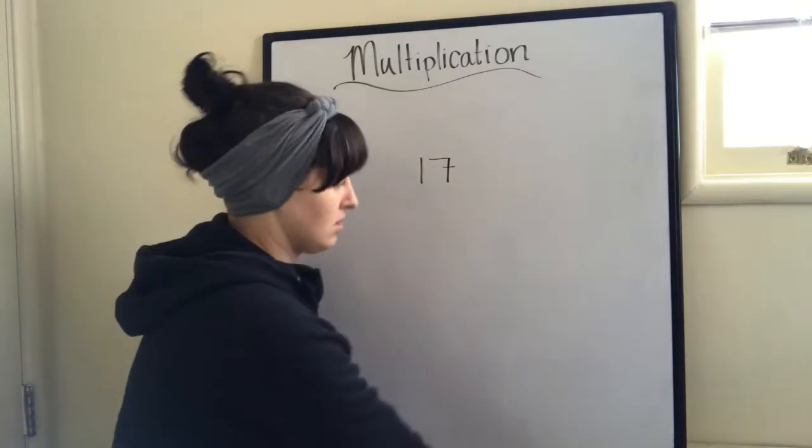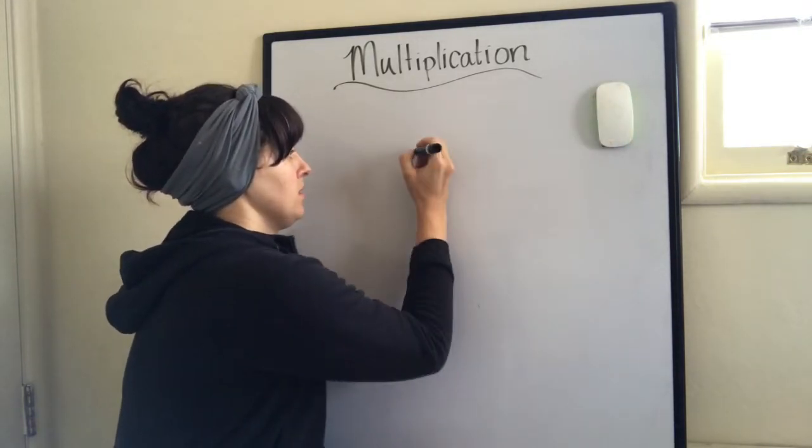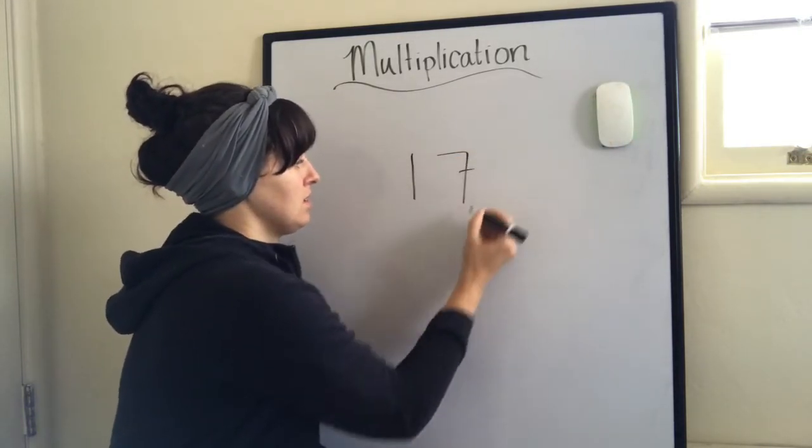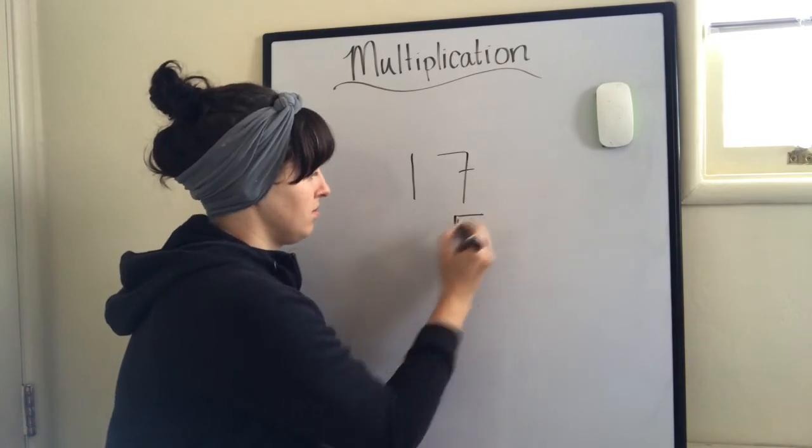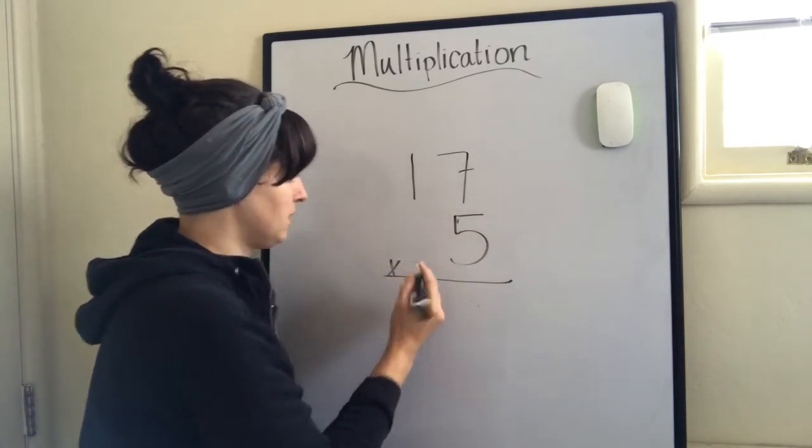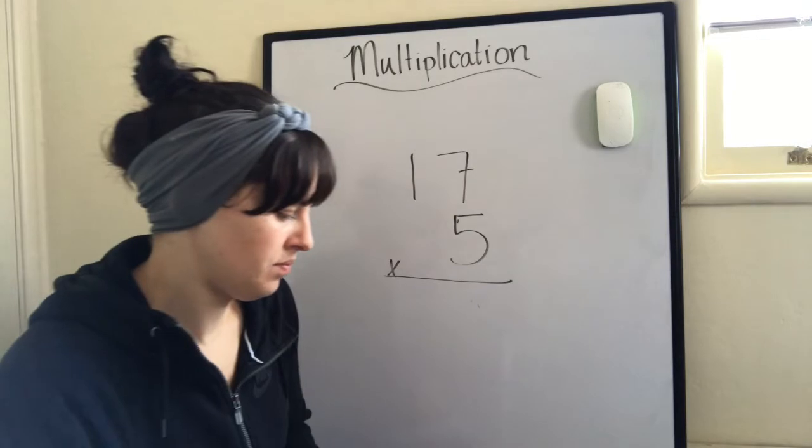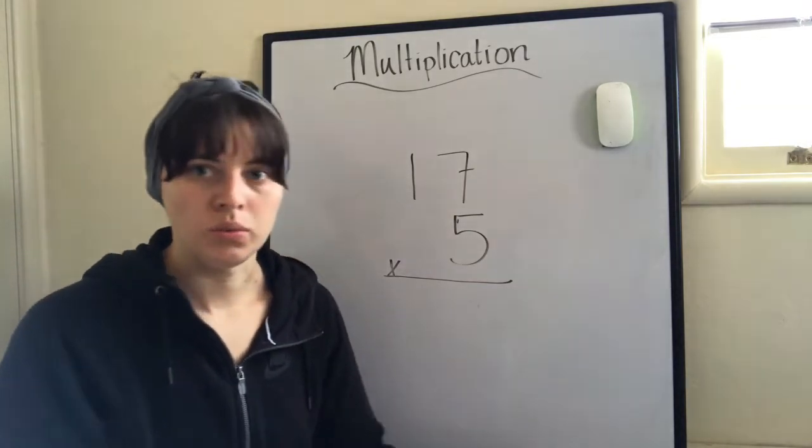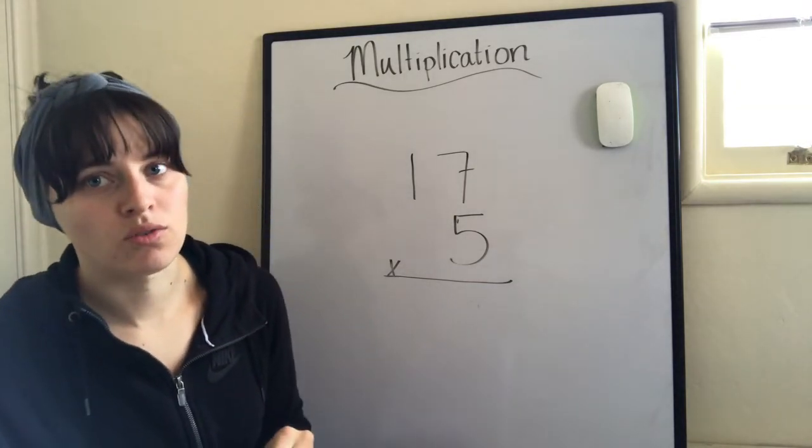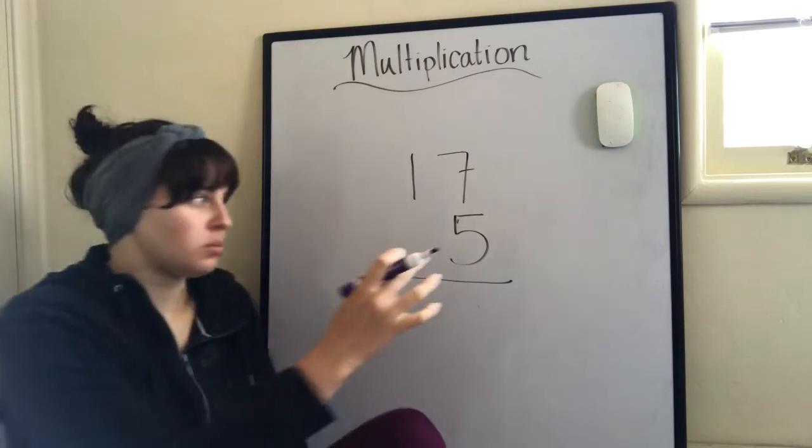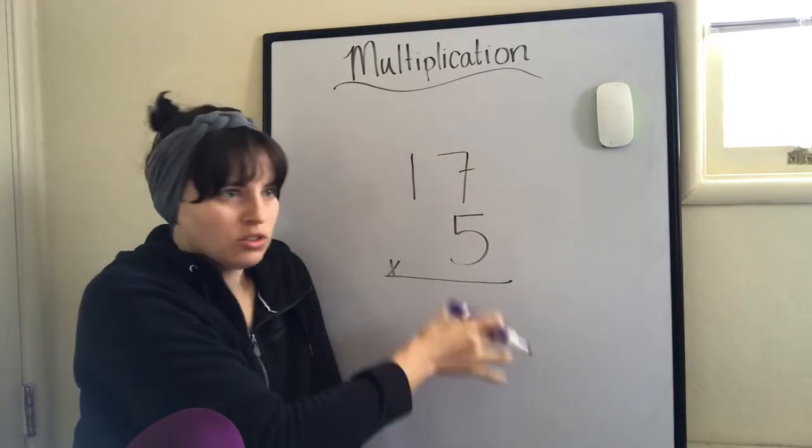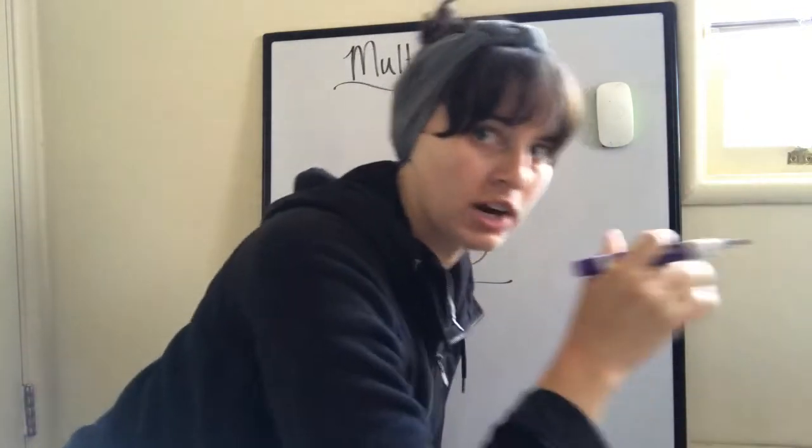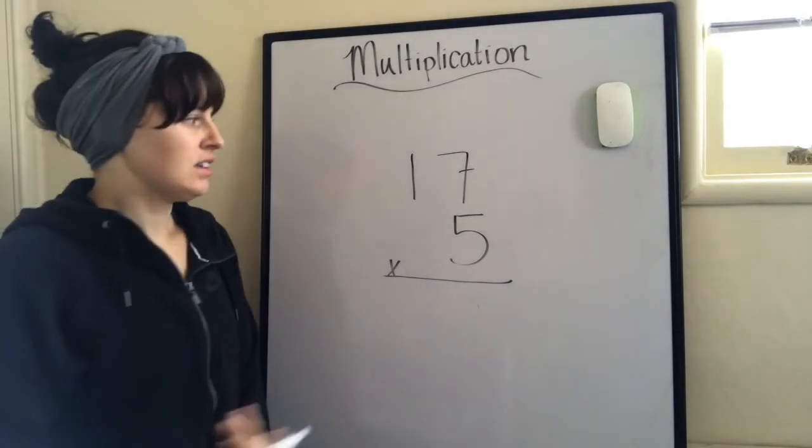17 times 5. So we know that there's a certain order that we have to multiply. It's not just going down, that's addition or subtraction, right? We have to actually get a little creative.